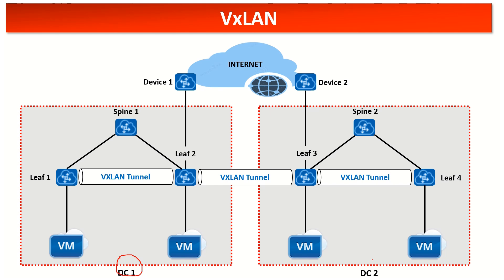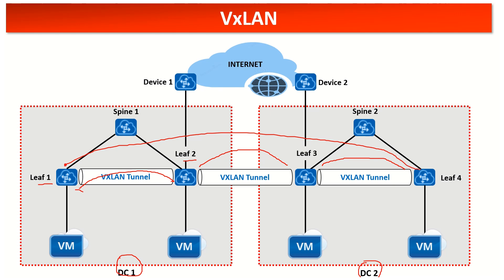We have DC1 on the left side and DC2 on the right side. VXLAN can be implemented across Leaf 1 and Leaf 2 — that is, within the data center — and also between Leaf 2 and Leaf 3, which spans across Data Center 1 and Data Center 2. Additionally, Leaf 3 and Leaf 4 can also have VXLAN, and interestingly Leaf 1 can have a Layer 2 VXLAN extension all the way to Leaf 4.